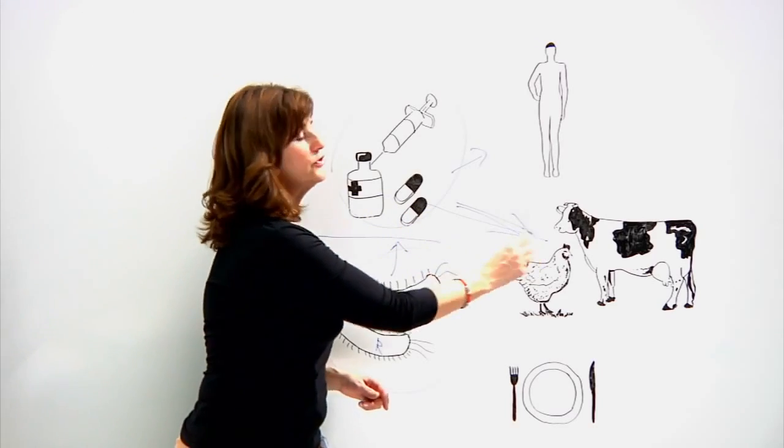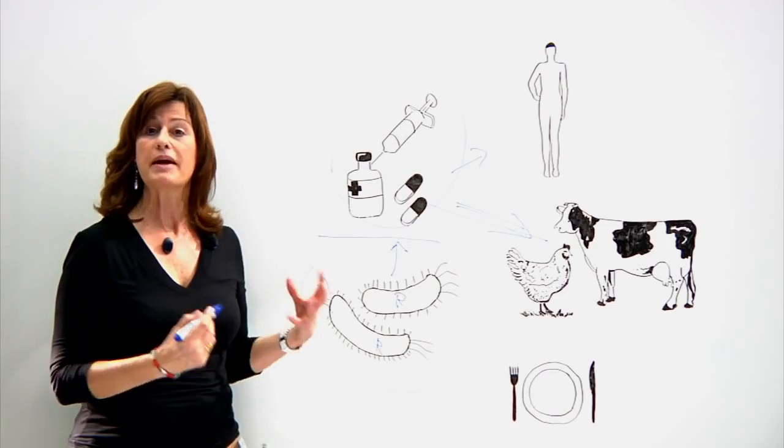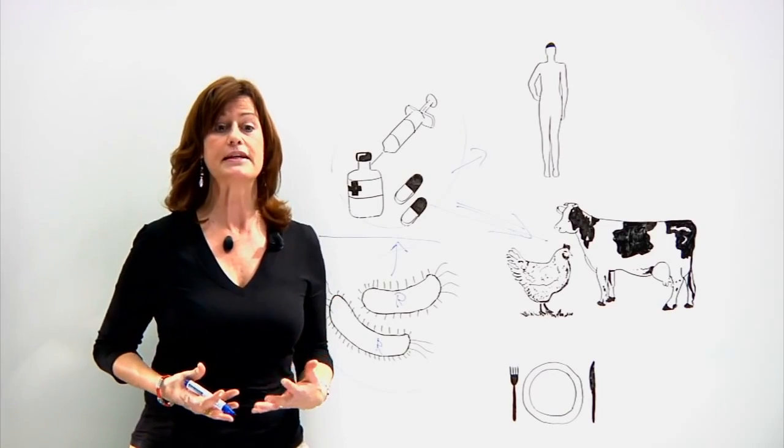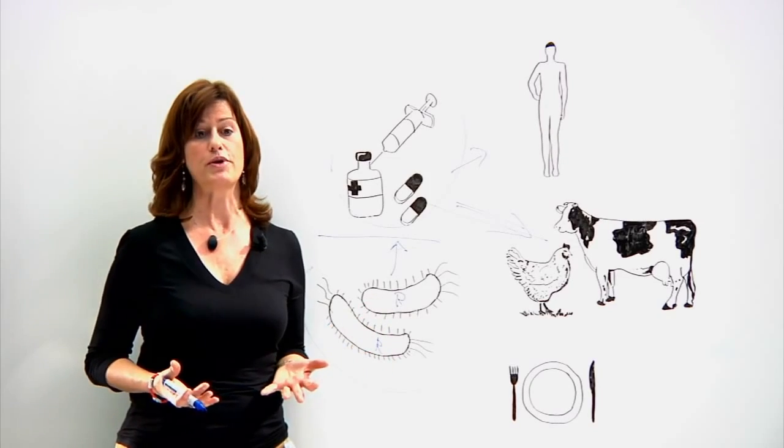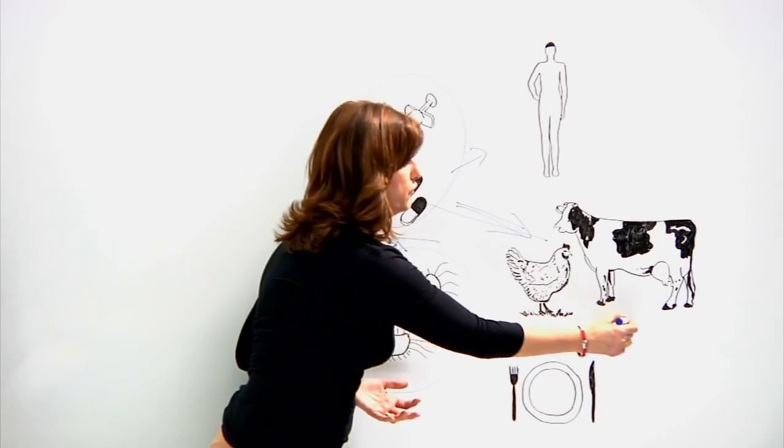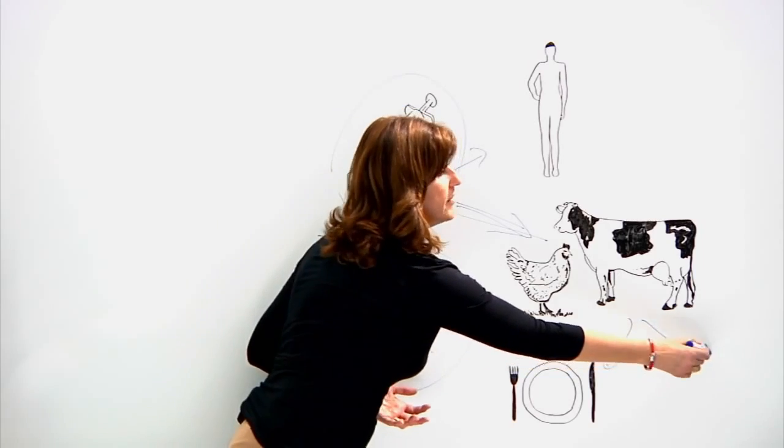Following the treatment of animals with antimicrobials, the bacteria that live in their gastrointestinal tract can become resistant to a given antimicrobial and can then contaminate the food but also the environment.